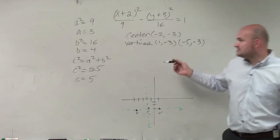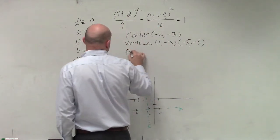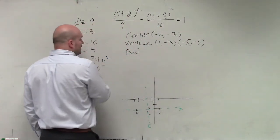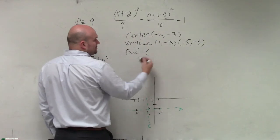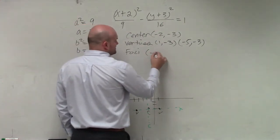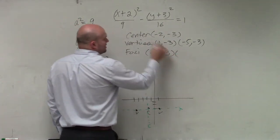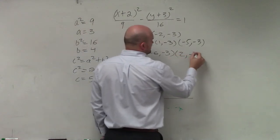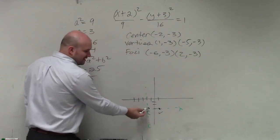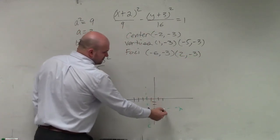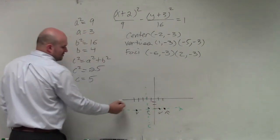I'm going to do the same thing for the foci. That's a distance of 4. So basically, from negative 2, I'm going to subtract 4, which would be negative 6, negative 3. And I'm going to add 4, which would be 2, negative 3. Or just look at it like this: going 4 to the right, and going 4 to the left.